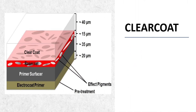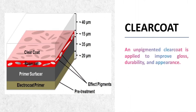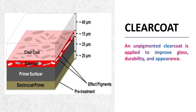An unpigmented clear coat is applied to improve gloss, durability and appearance. Most clear coats are acrylic-based, but polyurethane clear coats are increasing in popularity. These top coats provide outstanding etch resistance and appearance.